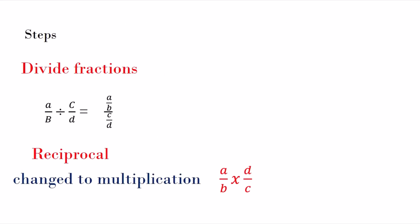If we take a look, the problem is in the form of division or fraction. We have a divided by b, which is divided by c divided by d. When you change to reciprocal method, you change from division to multiplication. So the d becomes on the top and c becomes on the bottom, and the left side is still the same.